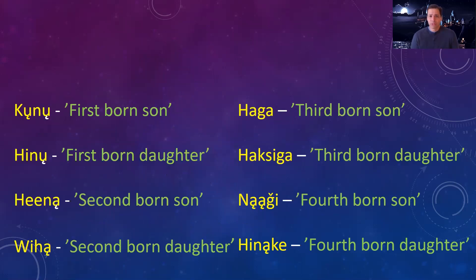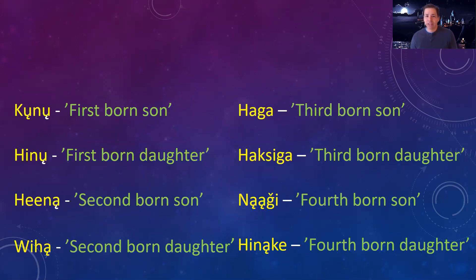Just like Kunu was the first man, your firstborn sons are named Kunu. Hinu was the first woman, so your firstborn daughters are named Hinu. Hena is your secondborn son, Wiha the secondborn daughter, Haga the thirdborn son, Haksiga the thirdborn daughter, Nagi the fourthborn son, and Hinanke the fourthborn daughter. This is where the birth order names come into play, where they come from, and how they are used.